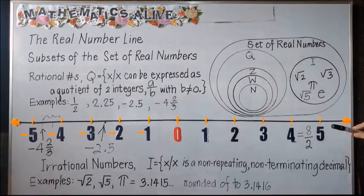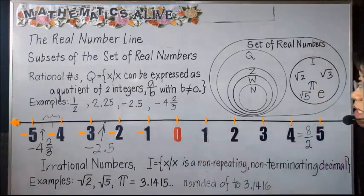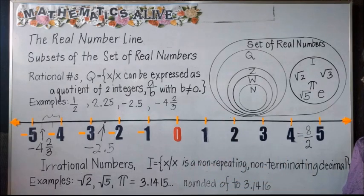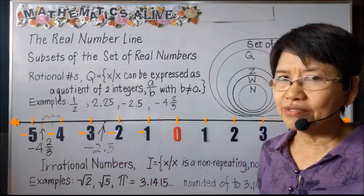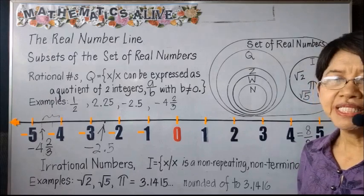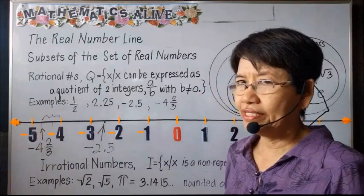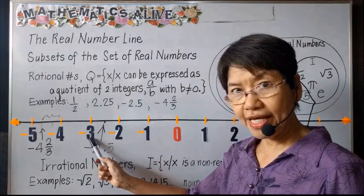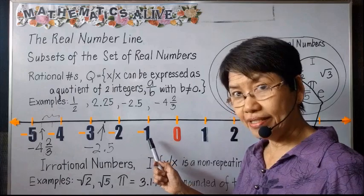This set of real numbers is represented along the number line. The numbers from 0 going to the right are increasing indefinitely, and the numbers from 0 going to the left are decreasing indefinitely. Meaning, as you go to the left, the numbers are decreasing — so negative 3 is less than negative 2, and negative 2 is less than negative 1.